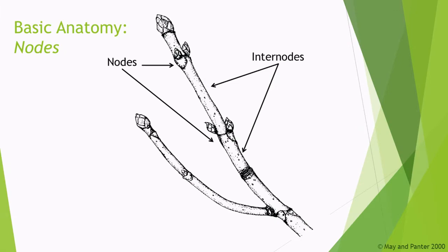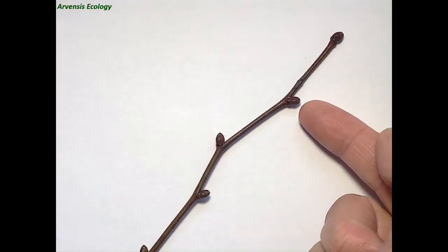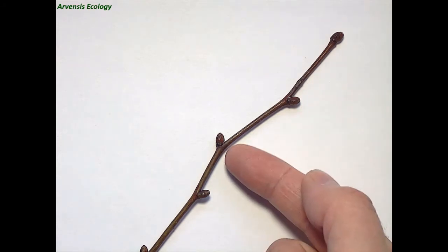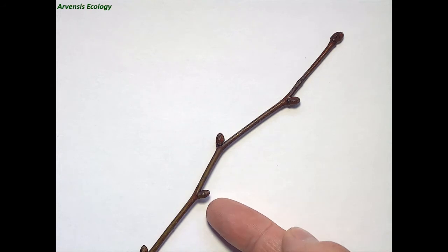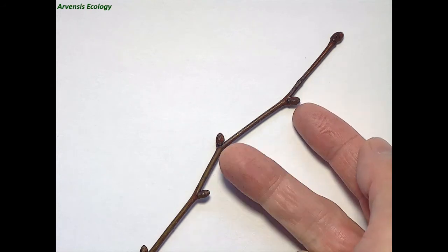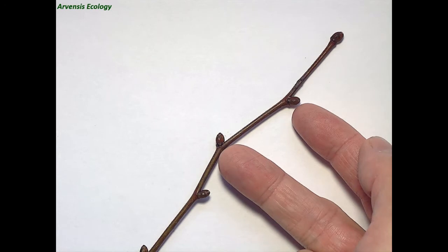When looking to identify a tree or shrub in winter, there are various bits of basic anatomy and terminology that you need to understand. Firstly, the use of the words nodes and internodes. Nodes are the parts of a plant where leaves will emerge from, so in winter it's the point where the buds are. The gaps between the nodes are known as internodes.